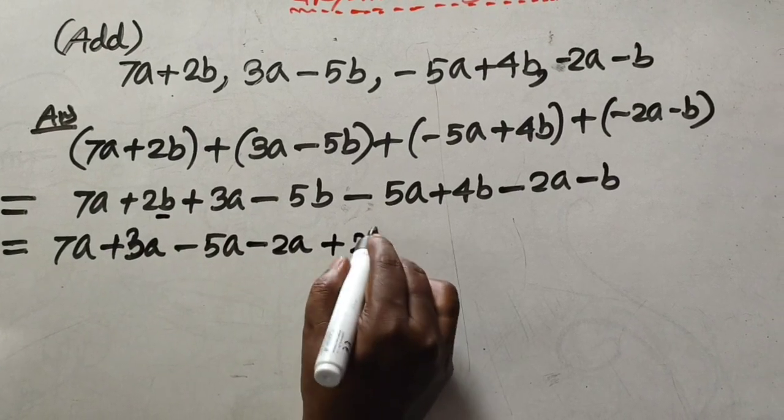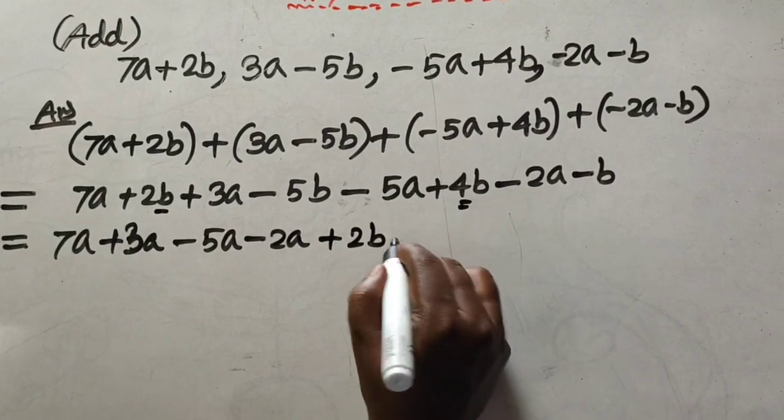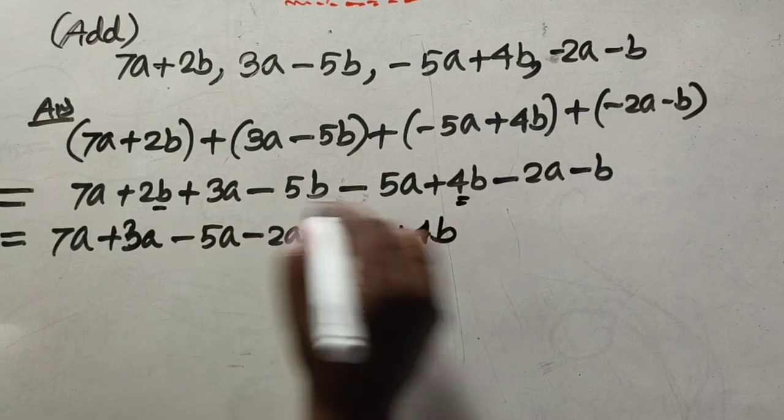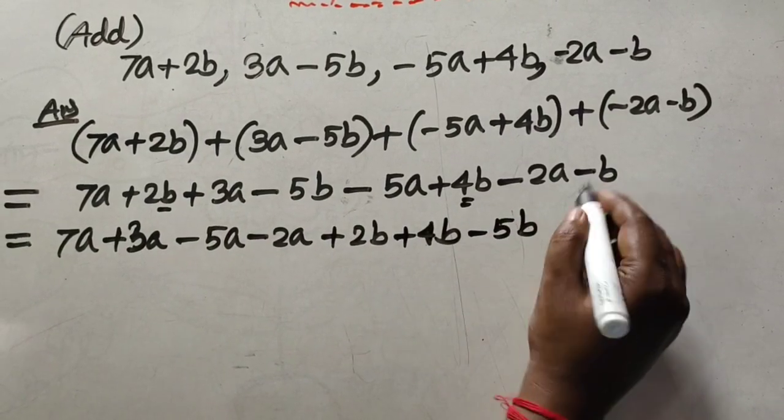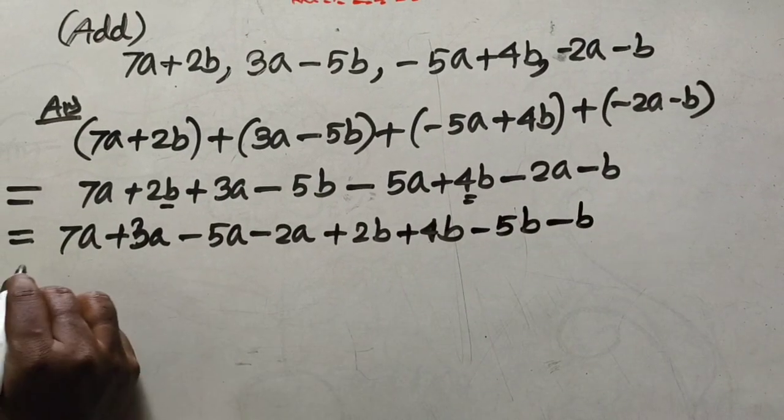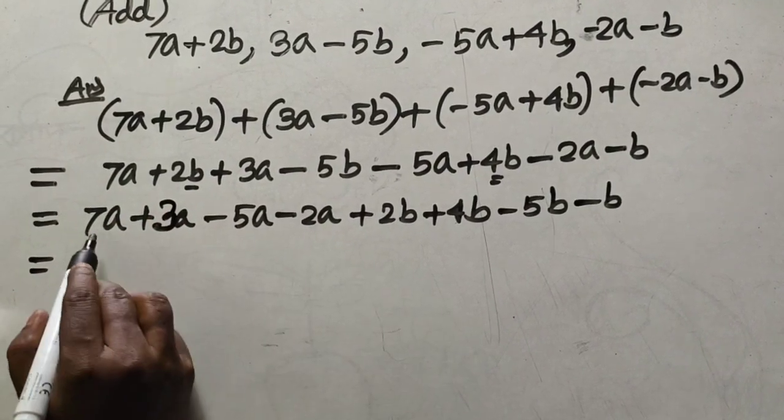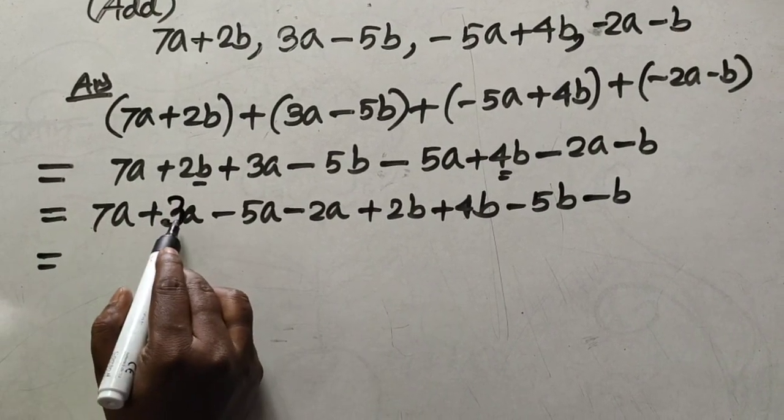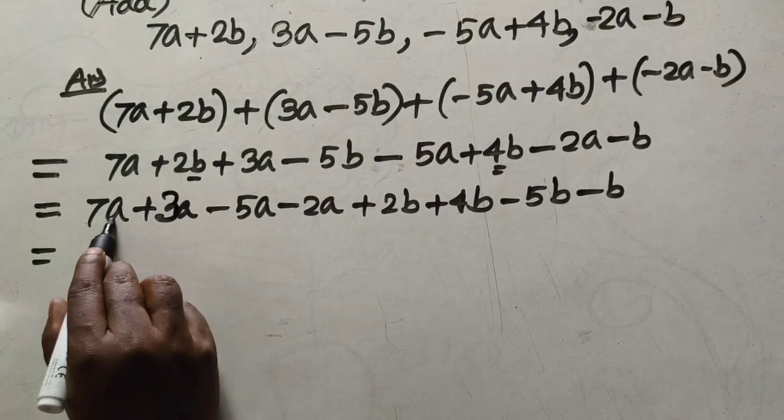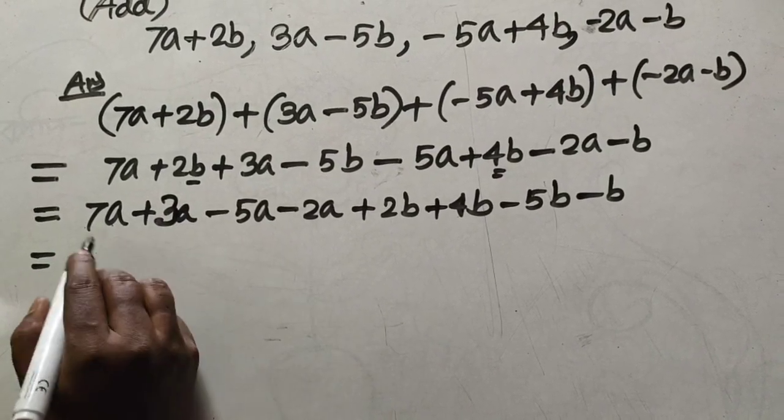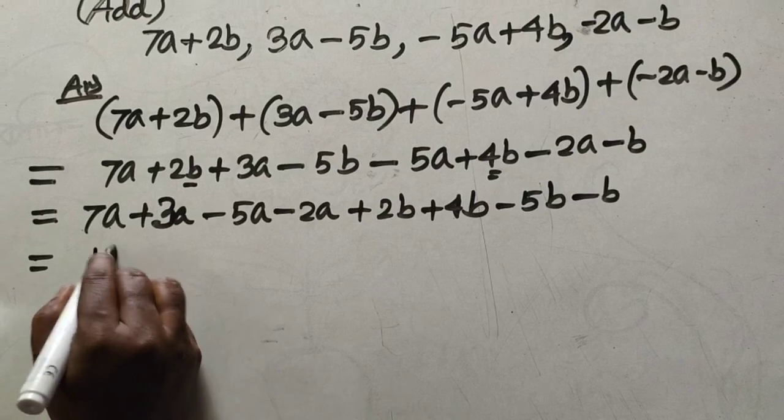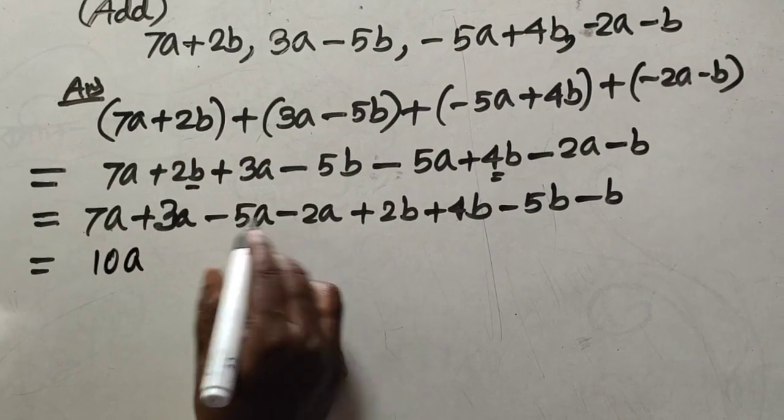For the b terms: 2b and 4b minus 5b minus b. So b becomes 2b + 4b - 5b - b. Combining a terms: 7a + 3a - 5a - 2a gives us 10a - 7a, and for b terms we get 6b - 6b.